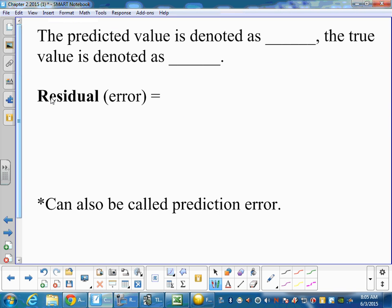Now we're going to learn about something called residuals. A predicted value is known as y hat. That's what we're predicting, but the true value is actually y.